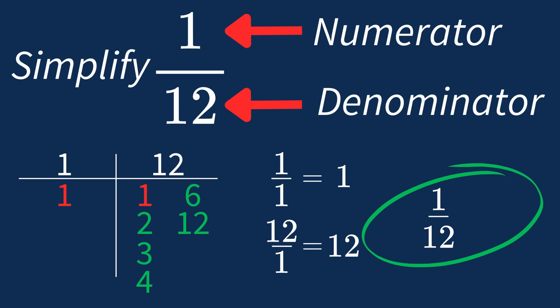This shows us that 1 over 12 is already in its simplest form. There's no larger number that can divide both parts evenly. So 1 over 12 is an irreducible fraction, meaning it's as simple as it can get.